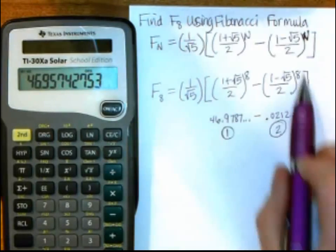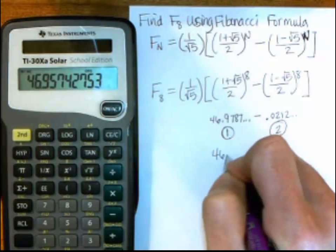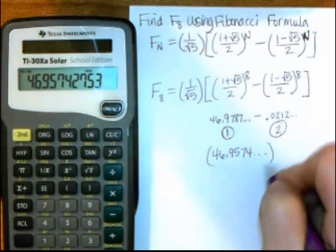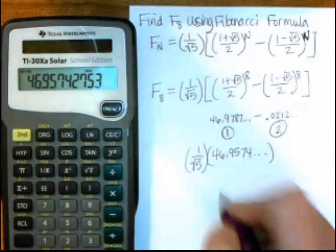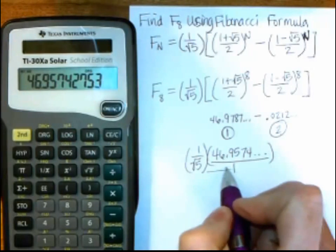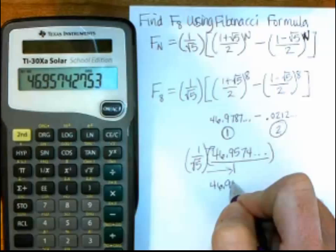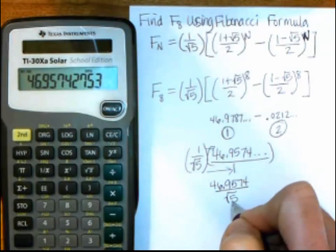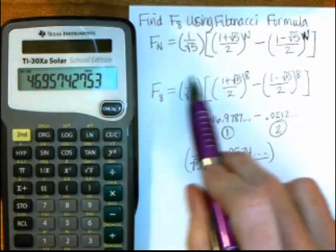And now I have the result for this whole big set of parentheses here. So I have 46.9574, and it goes on, and that I need to multiply by 1 over the square root of 5, which remember is going to be the same thing. Think of that as being over 1, so I'd multiply straight across for the top and the bottom, so I have 46.9574 over the square root of 5. That makes it easier to do on the calculator, so when I multiply something by 1 over the square root of 5, it's the same thing as dividing by the square root of 5.